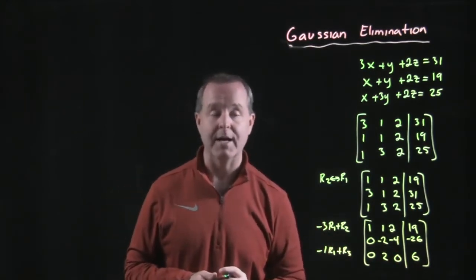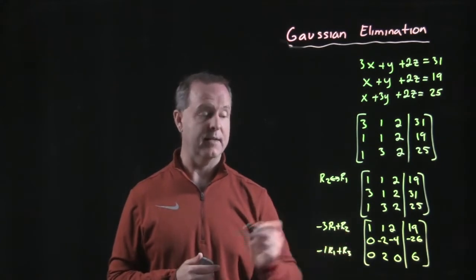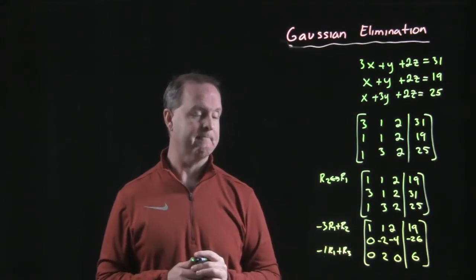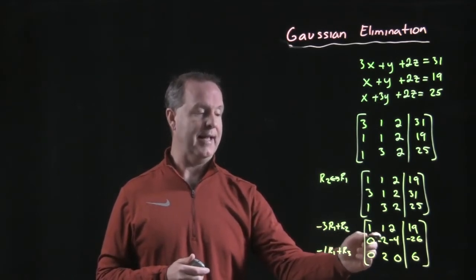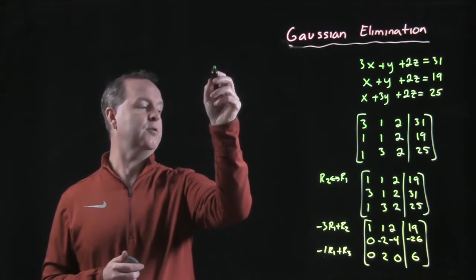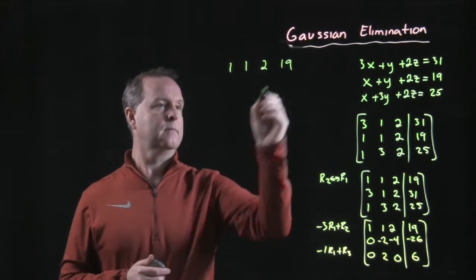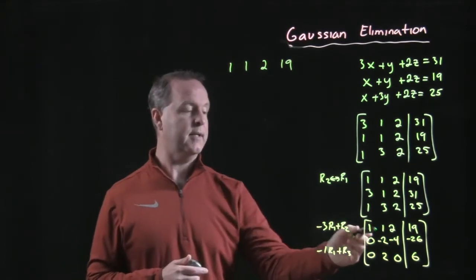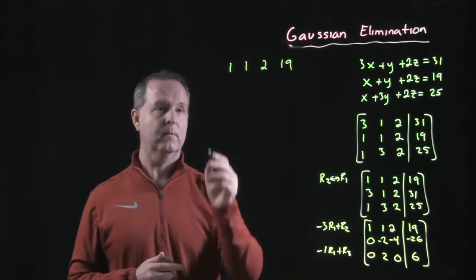All right, so we're on our way to row echelon form. Notice I have a one in the first diagonal spot and zeros underneath of it. From here, we want to get a one in that center spot. So let's go ahead and just rewrite our first part of the matrix. So what do you think we should do to get a one in this spot where the negative two is at? That's right.